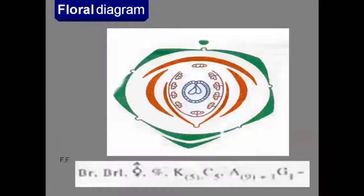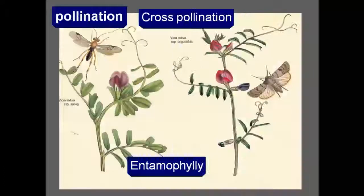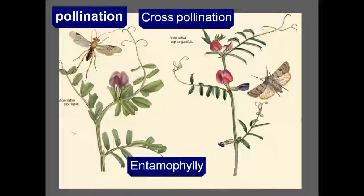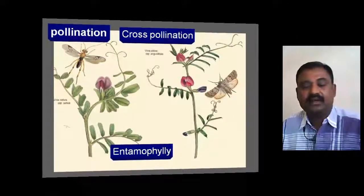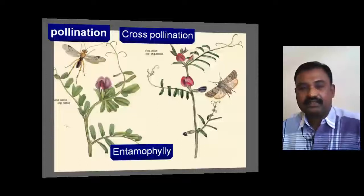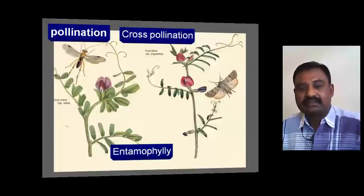Regarding pollination in Fabaceae: generally, cross-pollination occurs in Fabaceae members with the help of insects. This is called entomophily.